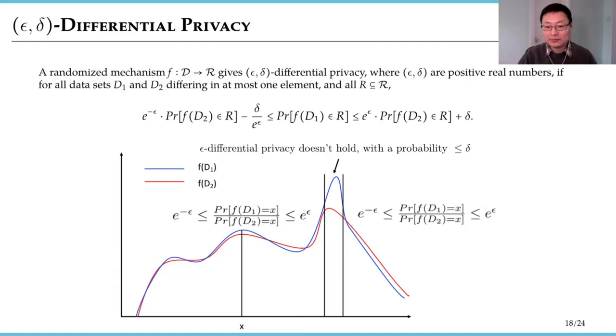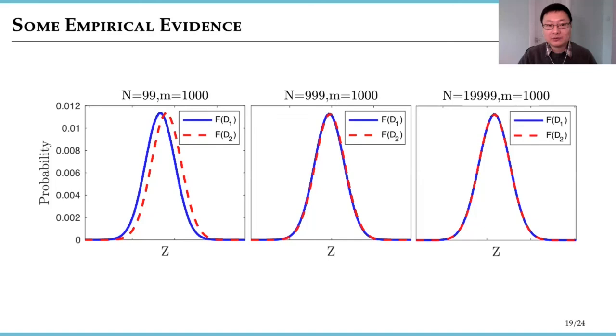Does this hold in practice? Here are some empirical results from simulation. The curves in the diagram show the output distribution of our protocol. The blue line was produced using a set that is of cardinality N and the red dotted line was produced using the same set plus an additional element. But we can see the curves are getting closer and closer when N increases. That means the output distributions from the neighboring data sets will eventually become close enough for differential privacy to hold.